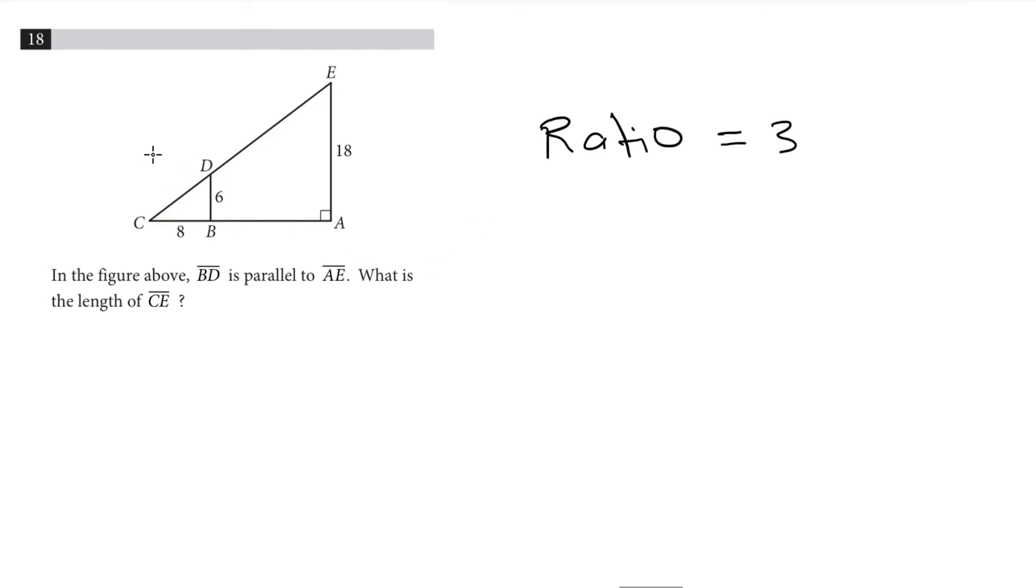Well, in order to do that we first need to find the length of the side CD. And then we can multiply it by the ratio, that is 3, and get the length of the side CEA. So let's find CD.